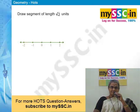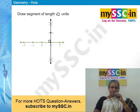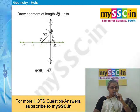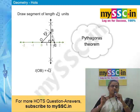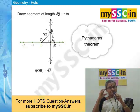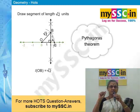Mark the origin, then take some distance with a compass and mark one unit and two units. At the one-unit distance, draw a perpendicular, and on that perpendicular take the same one-unit distance. Join the origin and that point — that length will become √2. Here we are using the Pythagorean theorem: the sum of the squares of the perpendicular sides gives the square root of the hypotenuse.